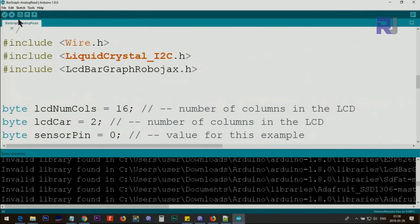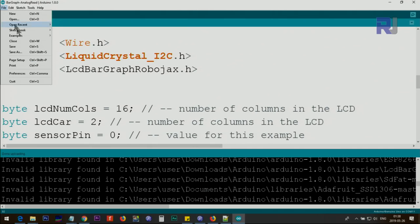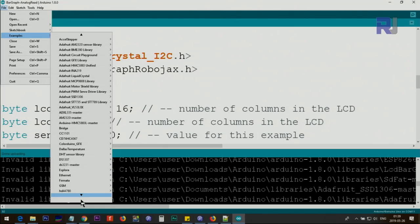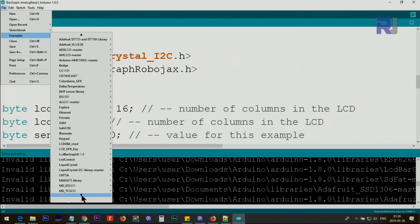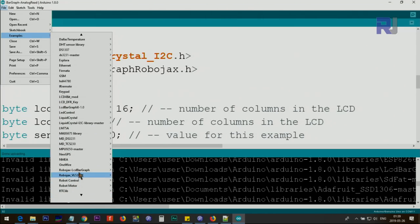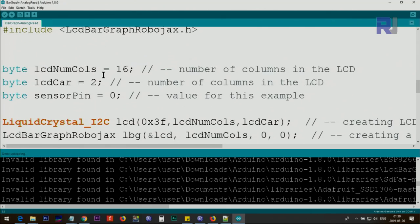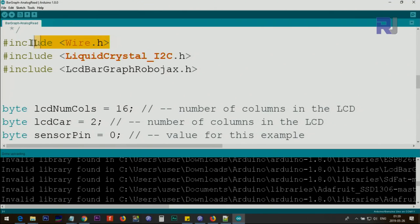After that you will have the example file. You can open it by clicking at the file, examples, and scroll down until you reach to our Robojax, LCD bar graph, and open analog read, which is this file. Wire.h is a file that is part of Arduino. You don't have to do anything. These two are classes that are needed for this purpose.